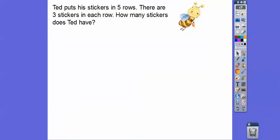So Ted put stickers in five rows. Rows go this way. If they ever say columns — we won't say columns in this one — columns go up and down. I don't know if you've seen a picture of the Coliseum and they have these posts that go up and down. That's how I remember: columns go up and down, rows go left and right.